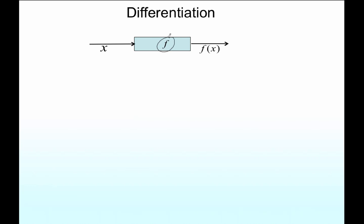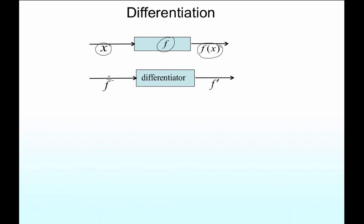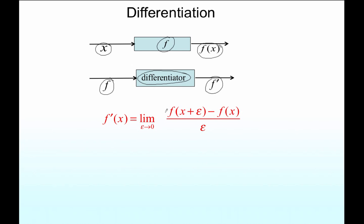Let's begin by reviewing the meaning of differentiation and of a derivative. Here is a function f that takes an input x — x is a number — and puts out another number f of x. The function f can be used as an input into another machine, which we call a differentiator, and out comes the derivative f prime. We shall assume henceforth that all the functions we encounter are differentiable — that is, this limit exists.